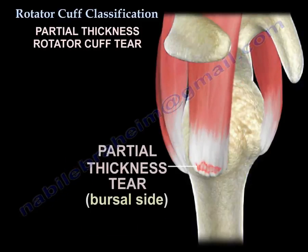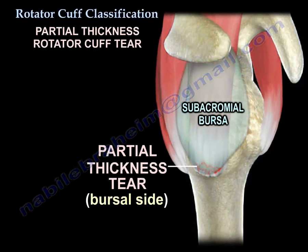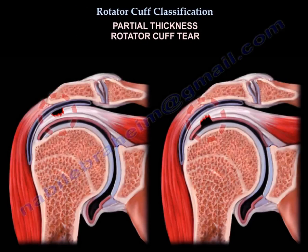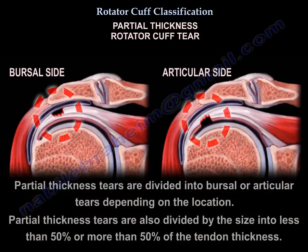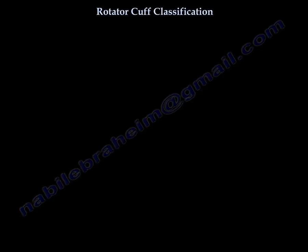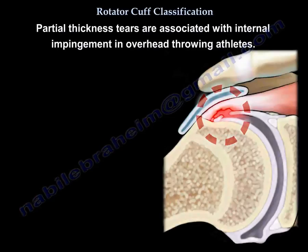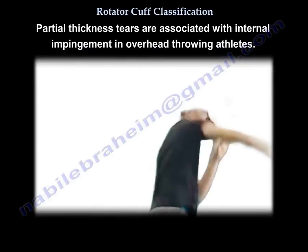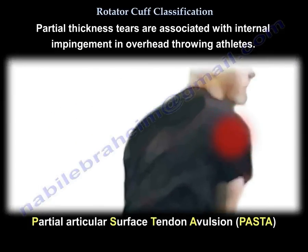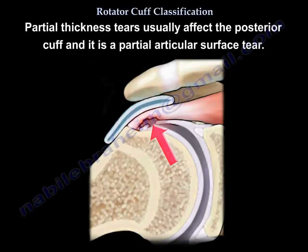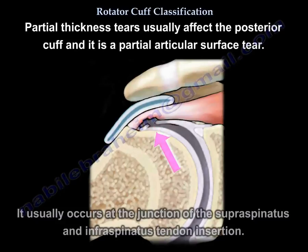For partial thickness tears, they are divided into bursal or articular depending on location, and also divided by size into less than 50% or more than 50% of the thickness. Partial tears are associated with internal impingement in overhead throwing athletes — they call it PASTA, which stands for partial articular surface tendon avulsion. It usually affects the posterior cuff, typically at the junction of the supraspinatus and infraspinatus tendon insertion.